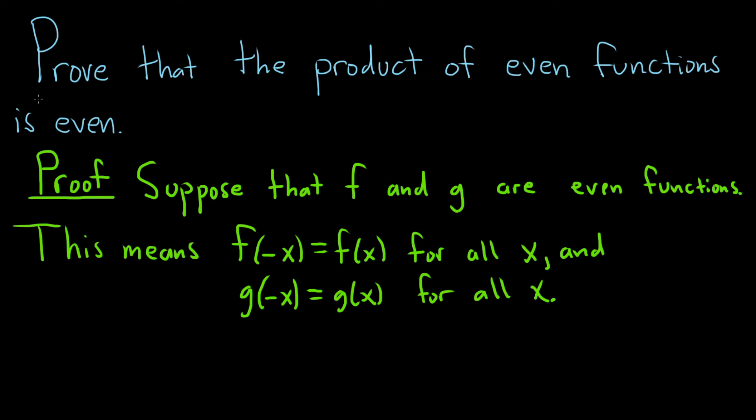Okay, so we've written down our hypothesis and then we did another step. We wrote down what it actually meant. So that's very typical in proof. You write down your assumption and then you write down what your assumption means. So f and g are even, what does that mean?